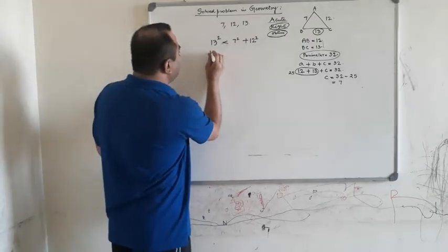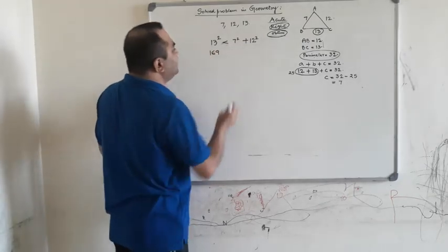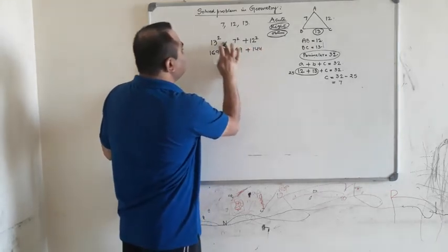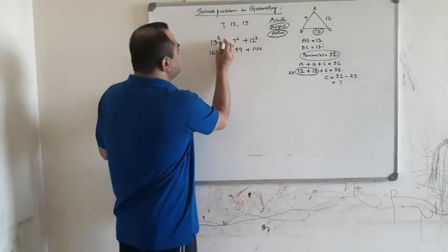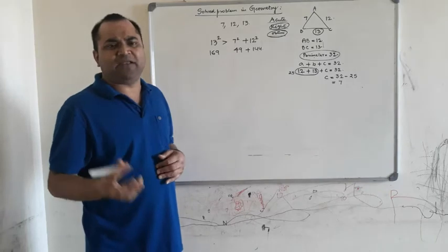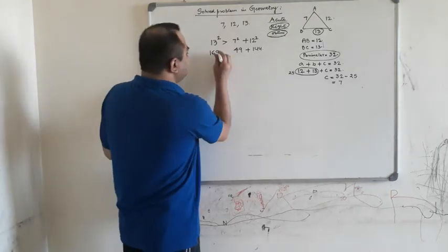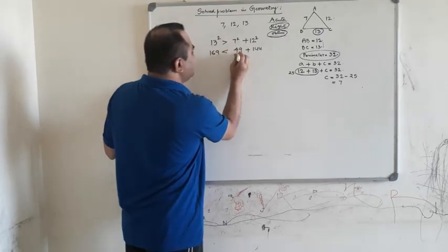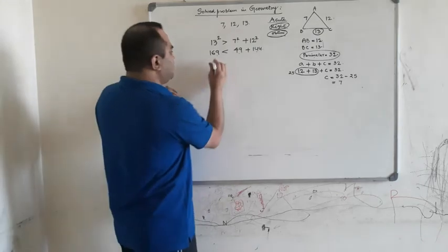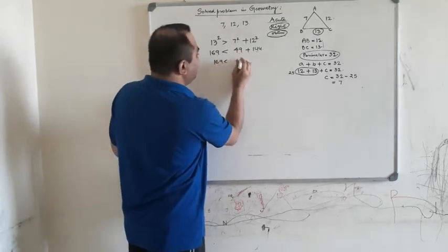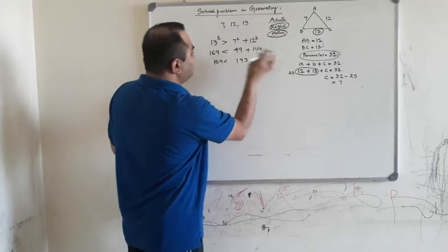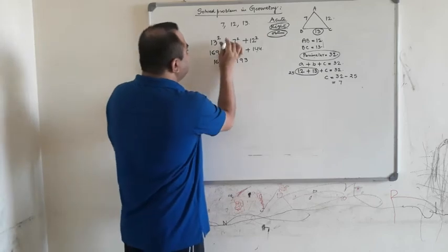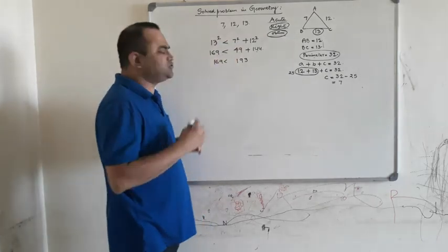We need to find 13 squared — I know it as 169. So: 7 squared is 49, and 12 squared is 144. We assumed 13 squared may be greater than 7 squared plus 12 squared, but it turns out 13 squared, which is 169, is actually less than 49 plus 144, which is 193.